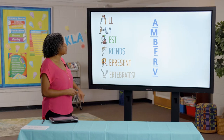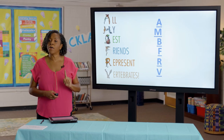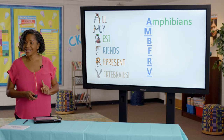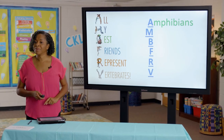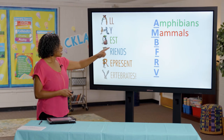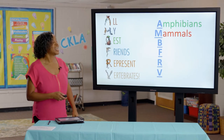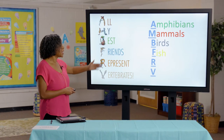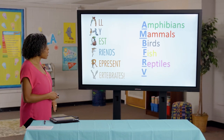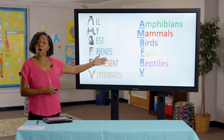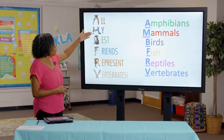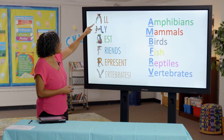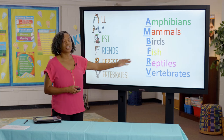This is what we call a mnemonic device and it will help you remember the five groups. The beginning letter of each of these words is also a beginning letter of the five groups. For example, A is for amphibians. M is for mammals. B is for birds. F is for fish. And R is for reptiles. All five of these groups are vertebrates — All My Best Friends Represent Vertebrates. Each letter represents one of the animal groups.